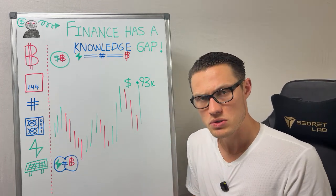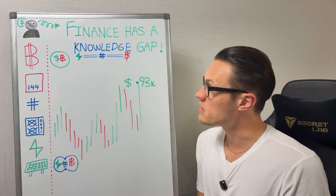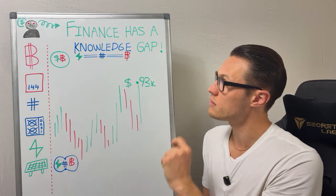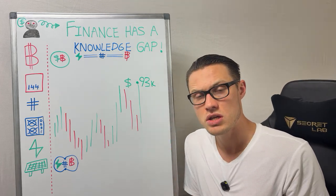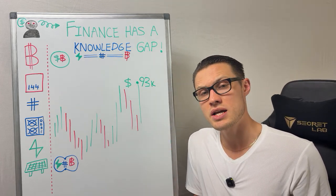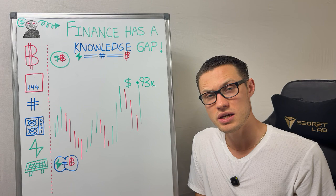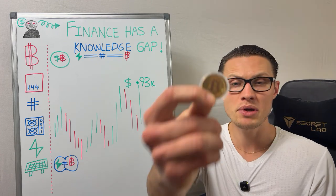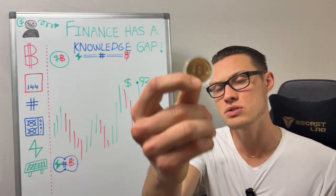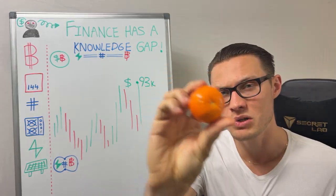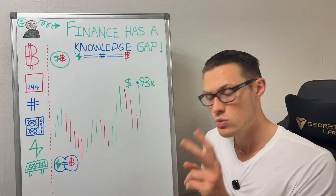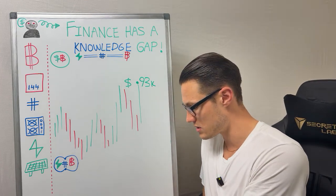The most important takeaway for this entire video — in the context of finance having a serious knowledge gap when it comes to their understanding of Bitcoin — is that Bitcoin is not just a digital asset. It's a commodity and it has two exchange rates.